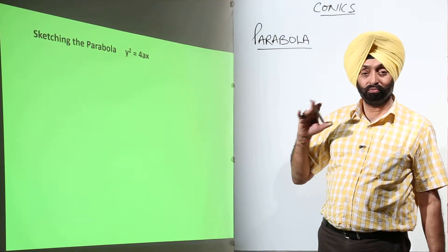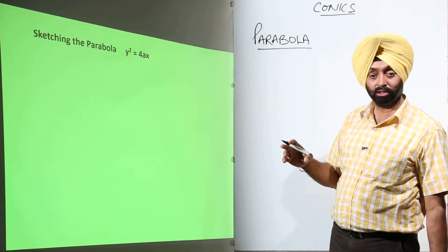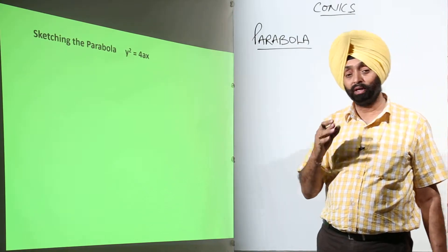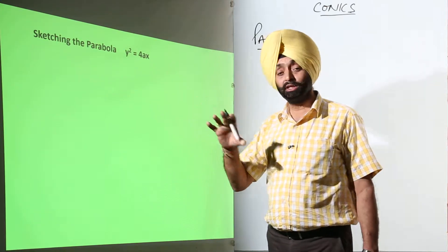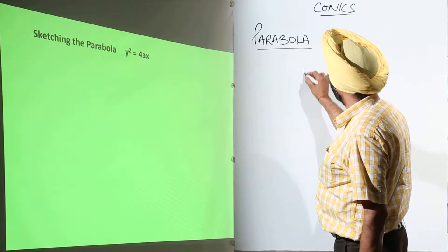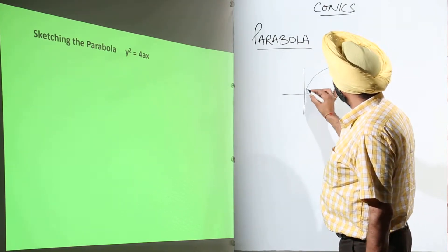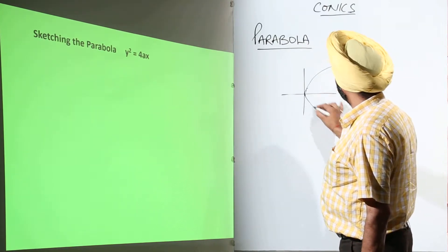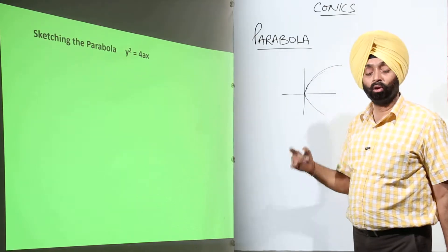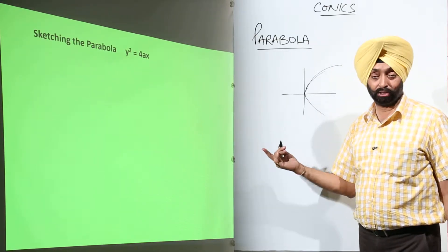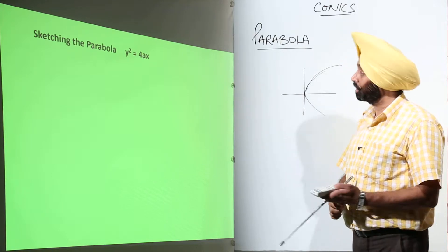Sketching the parabola. We have the equation y squared equals 4ax. Now how are we going to sketch it? We have seen a number of figures and gone through this part for a parabola. This is what we are going to discuss now.